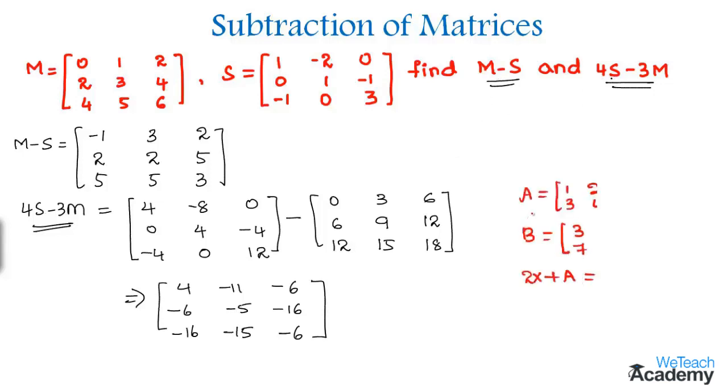And now there is one more example where we are given with the matrices A and B and also the condition which is 2X plus A is equal to B. And we need to find the matrix X. So the small hint required for this example is in order to find the matrix X we need to transfer A to the right hand side. So that would become 2X is equal to B minus A. And then transferring 2 to the right hand side we get X equal to 1 by 2 into B minus A.